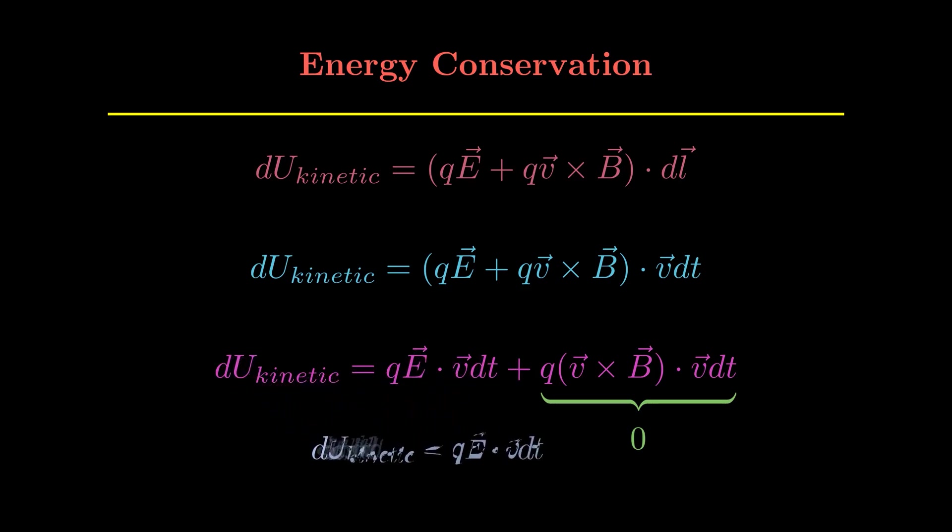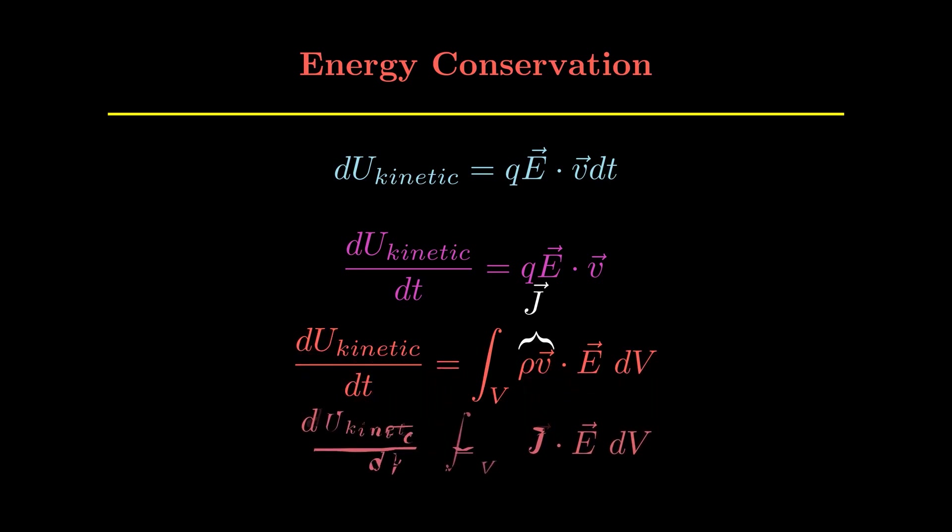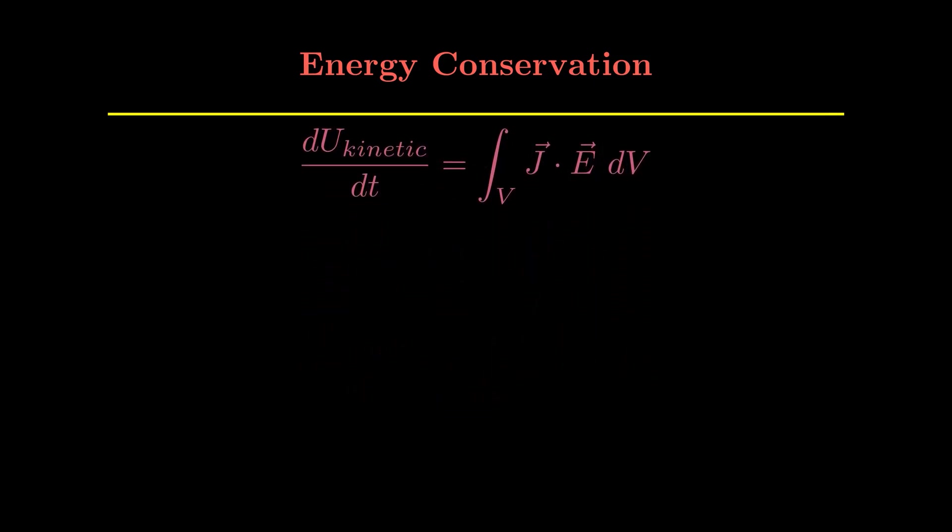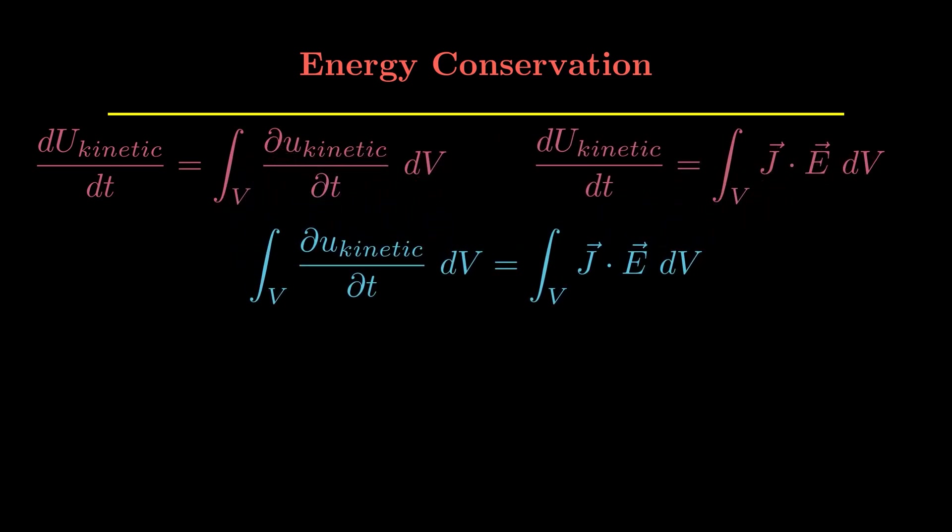Now again converting them to, dividing it by dt, and then converting it back to continuous terms where we will replace the q by ρ dV integral. We get this equation using J is equal to ρV. And then we will say let's consider u small u_kinetic as the energy density, kinetic energy density more formally.